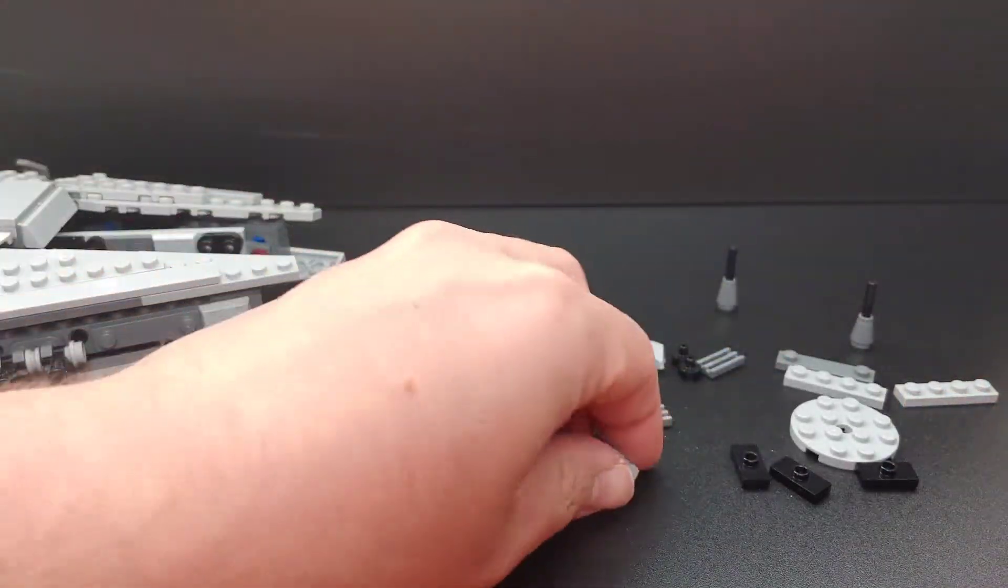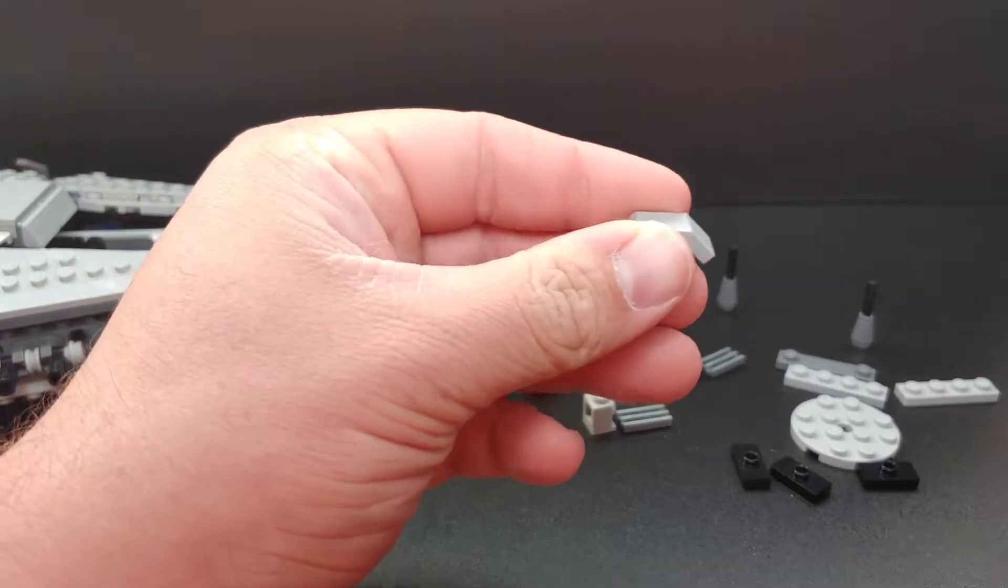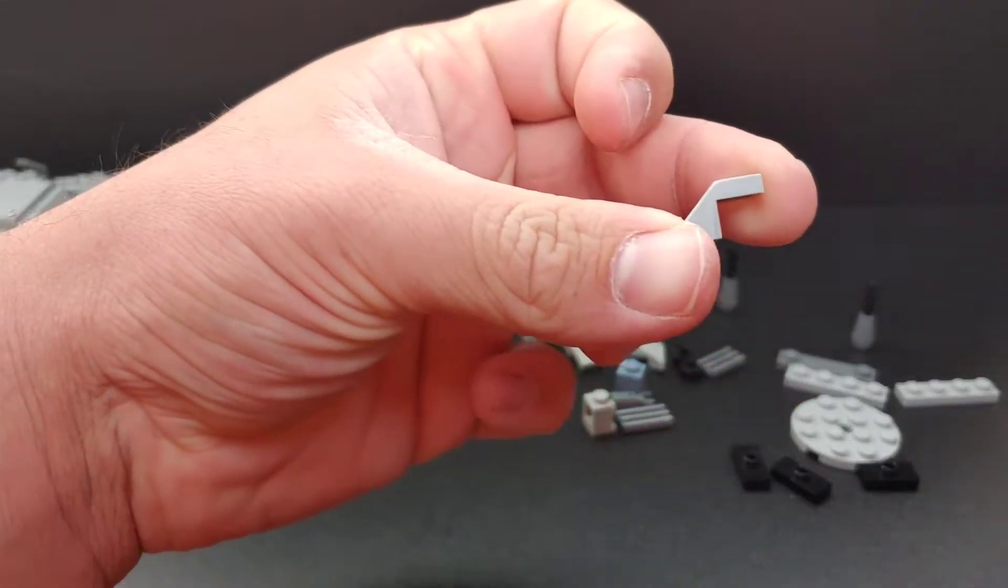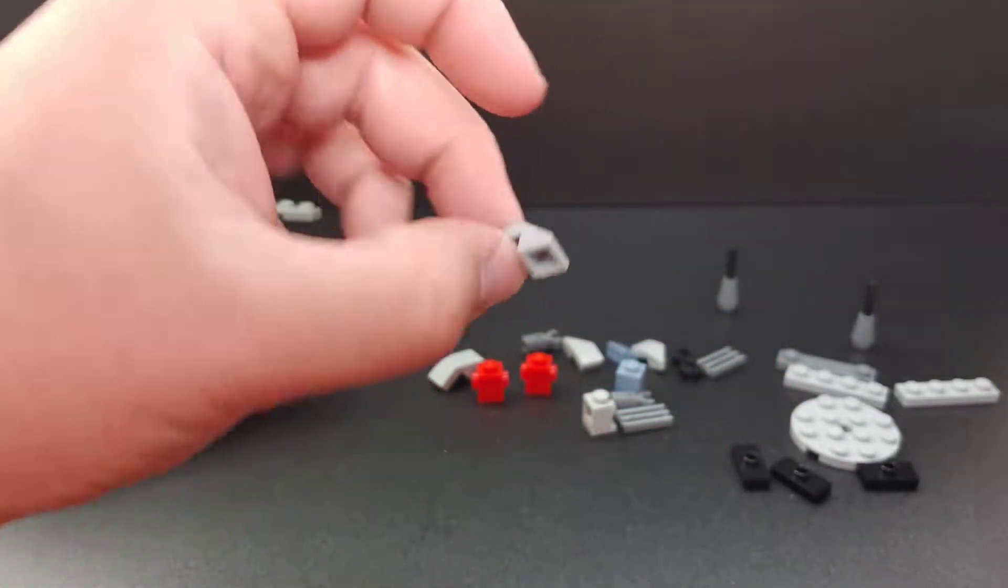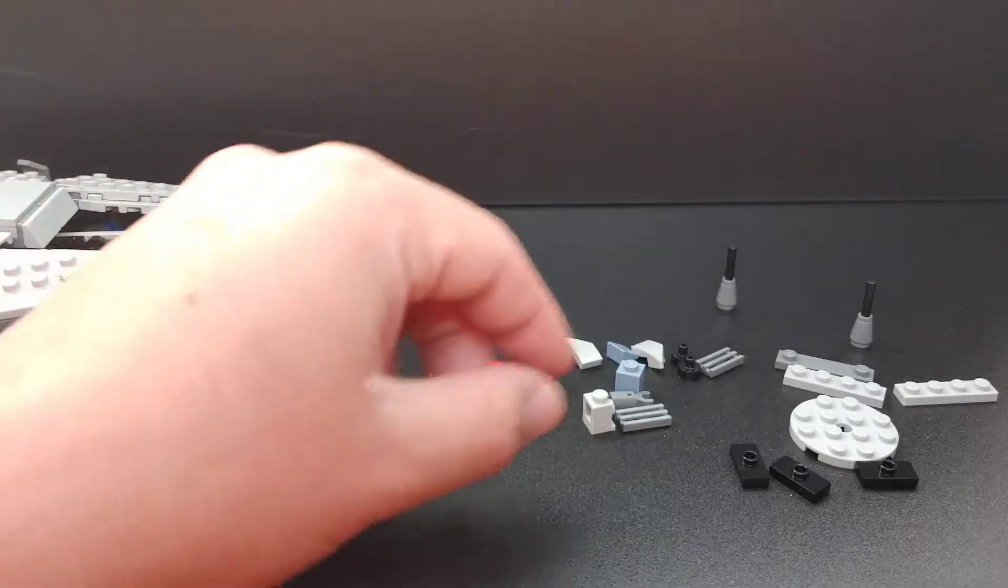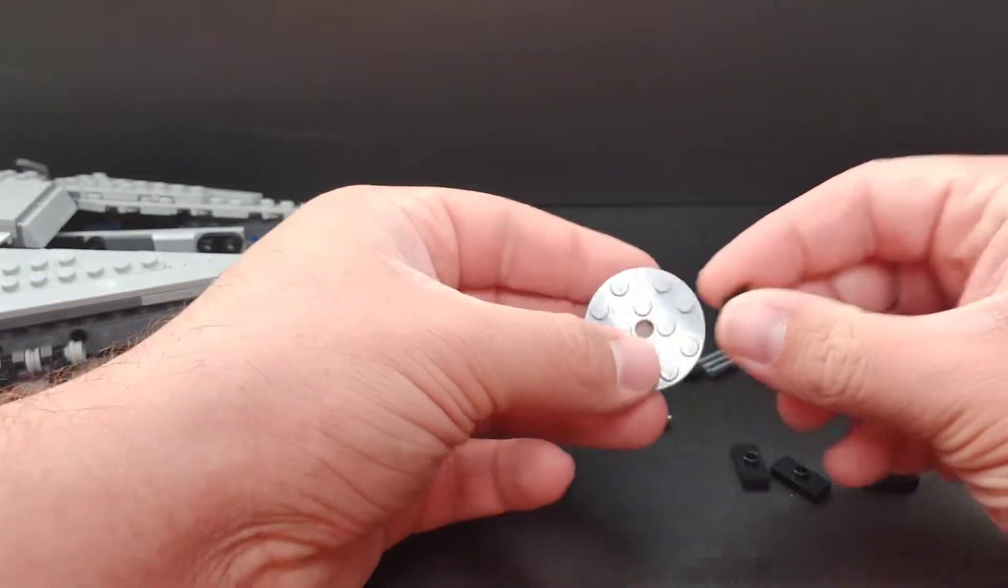All right, so now we're going to build the turret modification. On the last clip I didn't reference that you needed, or just say that you needed this piece here, or two of those. That's also included in the set.